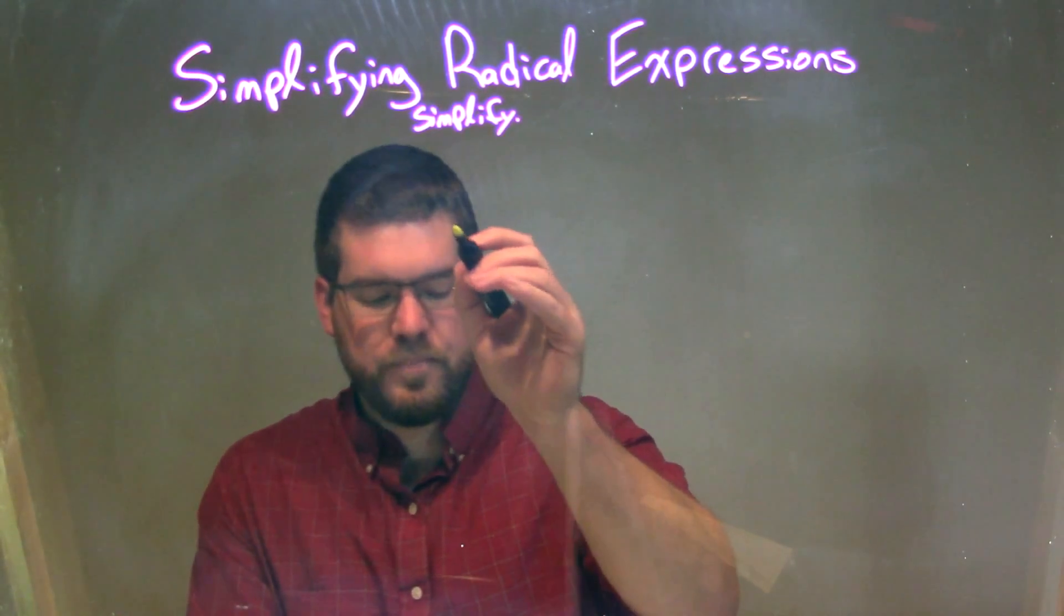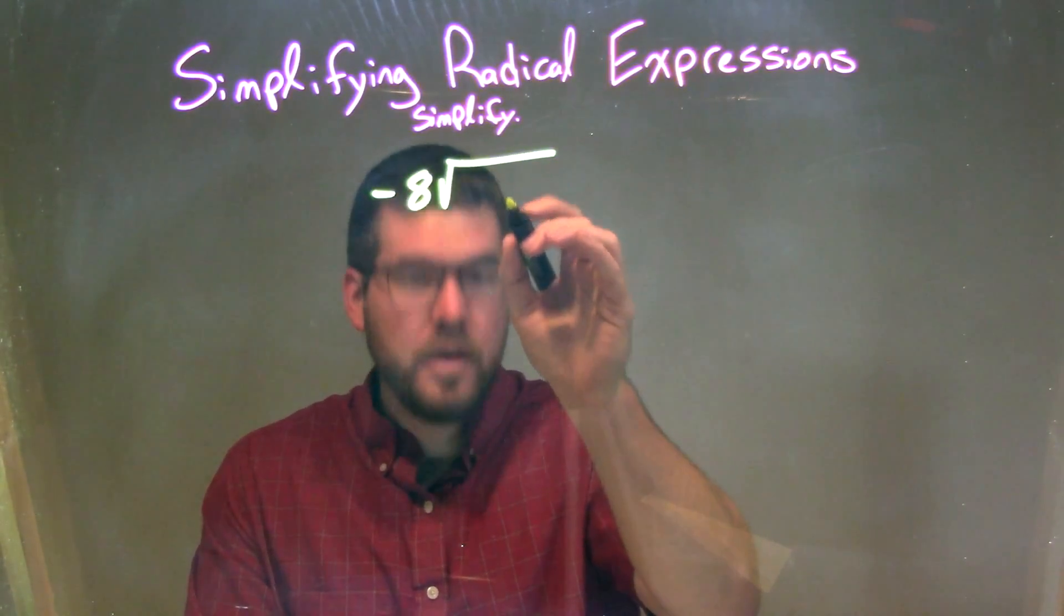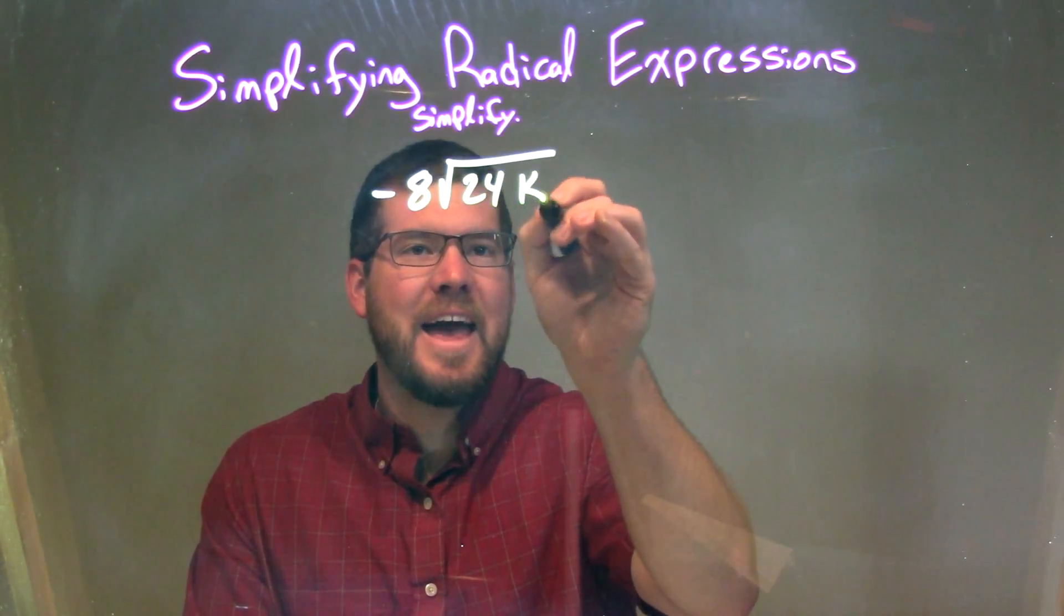So if I was given this expression, negative 8 times the square root of 24k to the third power, I want to break it down.